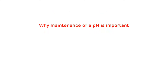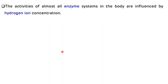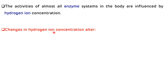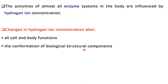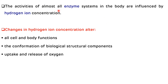Why is maintenance of pH important? Because the activities of almost all enzyme systems in the human body are influenced by hydrogen ion concentration or pH. Any alteration in hydrogen ion concentration can alter the functions of all cells and the body, the conformation of biological structural components, and the uptake and release of oxygen.